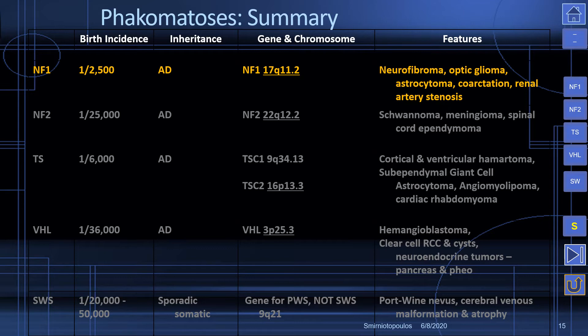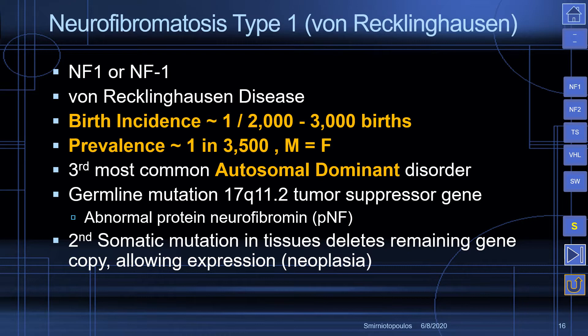The birth incidence of NF1 is approximately 1 in 2,500 live births. The prevalence is approximately 1 in 3,500, and there is no sexual predilection. As mentioned, it's the third most common autosomal dominant disease. Every cell inherits a germline mutation, but there is also a second somatic mutation that deletes the remaining copy of the tumor suppressor gene, allowing expression of the disease, including the development of neoplasia.